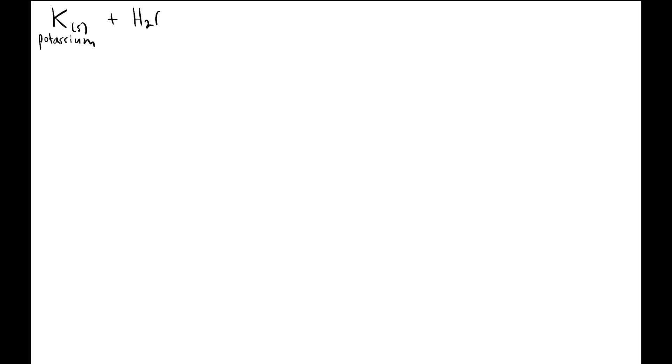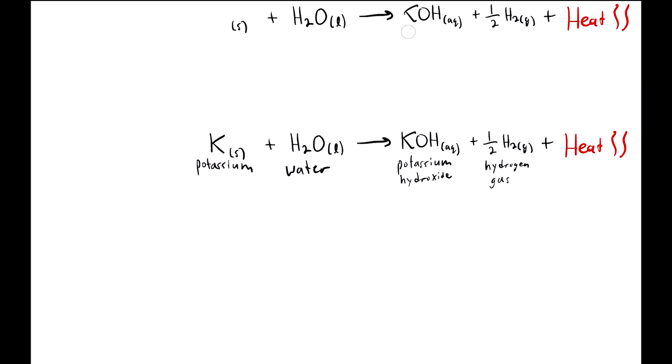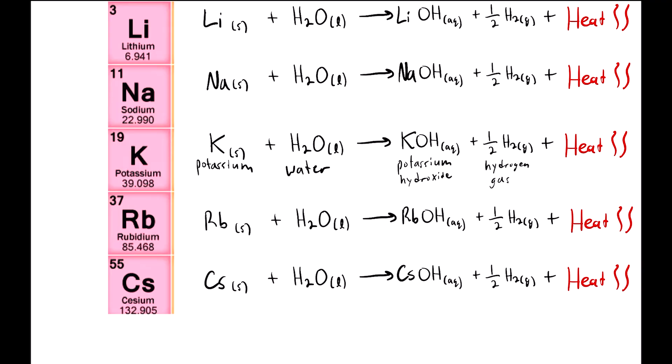When potassium metal is dropped into water, it reacts to form potassium hydroxide and hydrogen gas, and also produces a lot of heat. But this reaction is the same for pretty much every alkali metal, elements in the first column of the periodic table, from lithium all the way down to cesium.